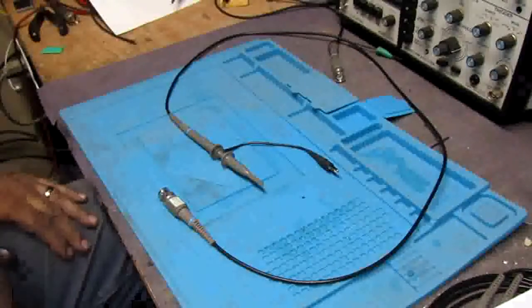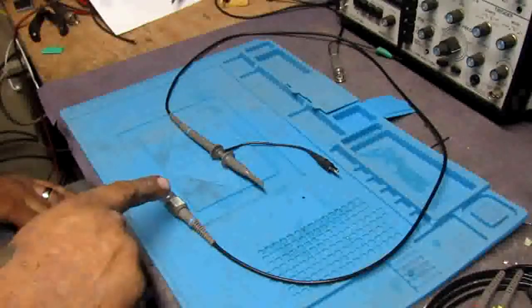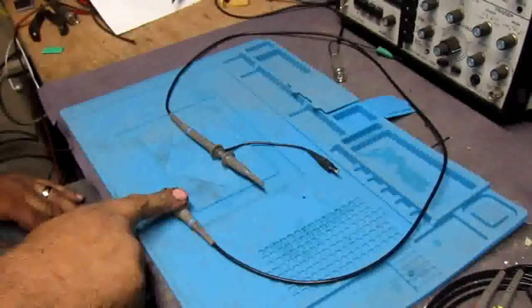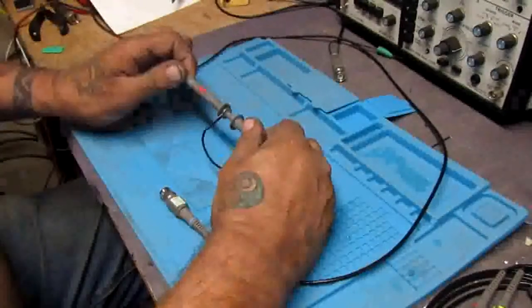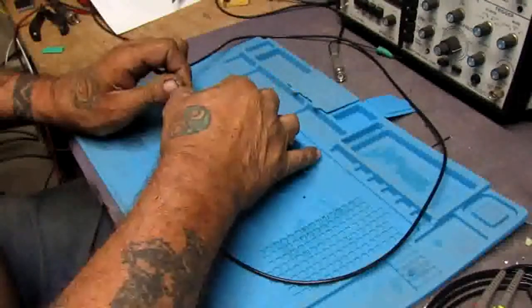Okay, so this is the P6100 probe. You have the BNC end and the probe end. The probe end has the 9 megohm resistor with the 1 and times 10 switch in it.